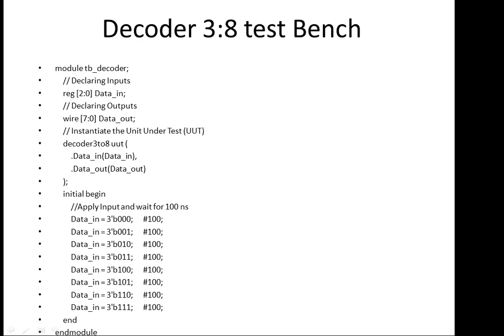In the testbench, we create an instance of the decoder module — 'decoder_3to8' — and connect data_in and data_out using dot notation. Then in the initial begin block, we provide values for data_in.